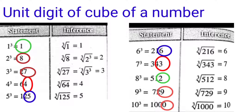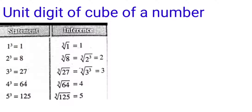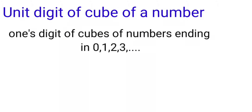In squares, the square of a number doesn't end with 2, 3, 7, or 8. But in cubes, the unit place may be 0, 1, 2, 3, all the way up to 9. So the unit digit of the cube of a number can end in any digit from 0 to 9.